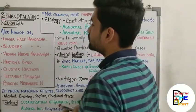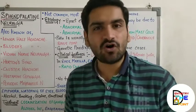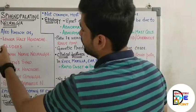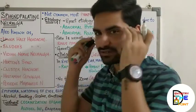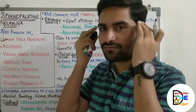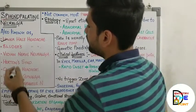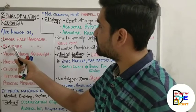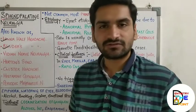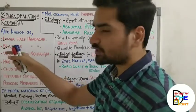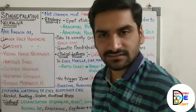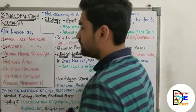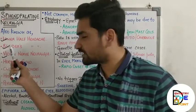There are various names for sphenopalatine neuralgia. It is called 'lower half headache' because it is associated with the lower half of the head region. It is also called 'Sluder's headache' because it was first described by Sluder, who named it sphenopalatine neuralgia — or it was named after him as Sluder's headache.